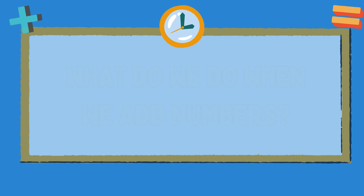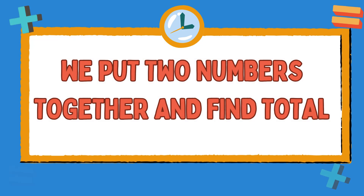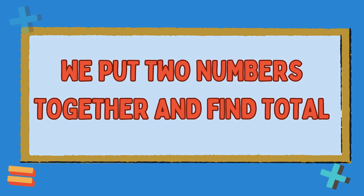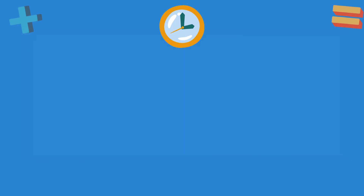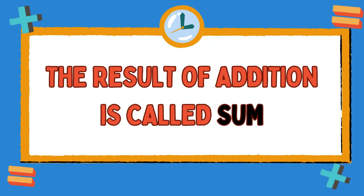Do you know what we do when we add numbers? Addition is when we put two numbers together and find the total of these numbers. Do you know what the result of addition is called? The result of addition is called sum.